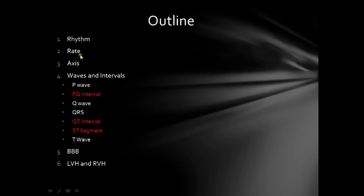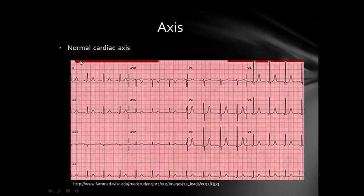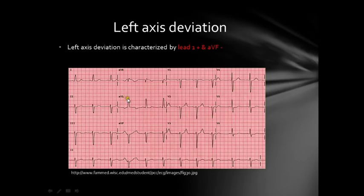Now let's check the axis of the heart. The normal cardiac axis represents the average direction of spread of depolarization through the ventricles. Normal cardiac axis means both lead 1 and AVF are upwards — lead 1 is upwards and AVF is upwards. Left axis deviation means lead 1 is positive and AVF is negative, indicating that the left ventricle is working more than the right ventricle.